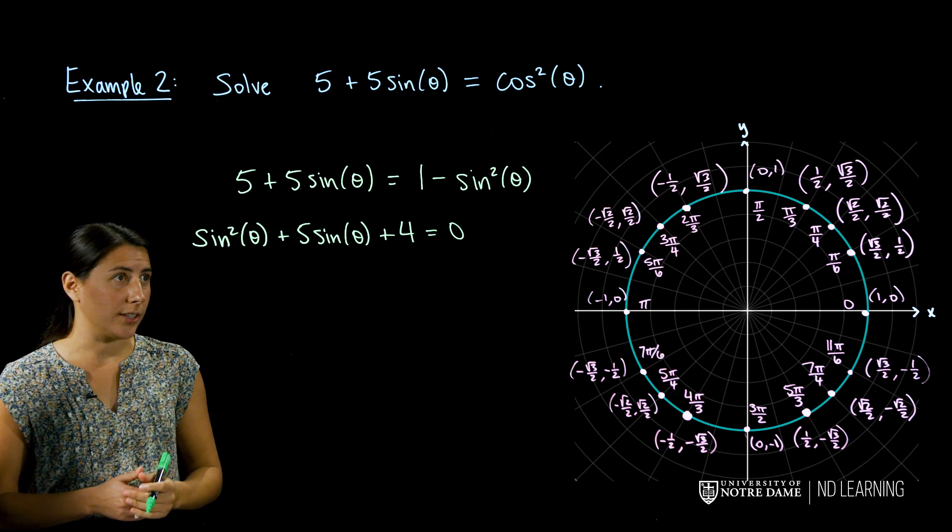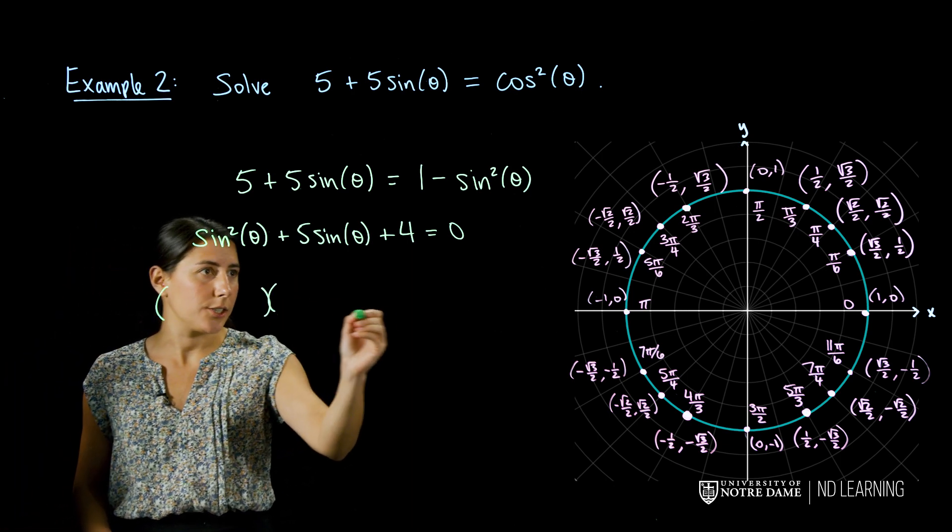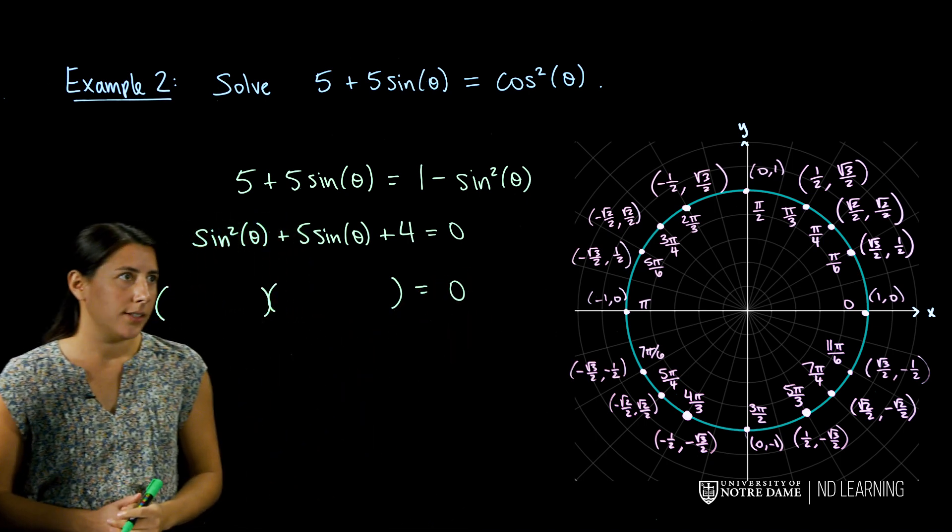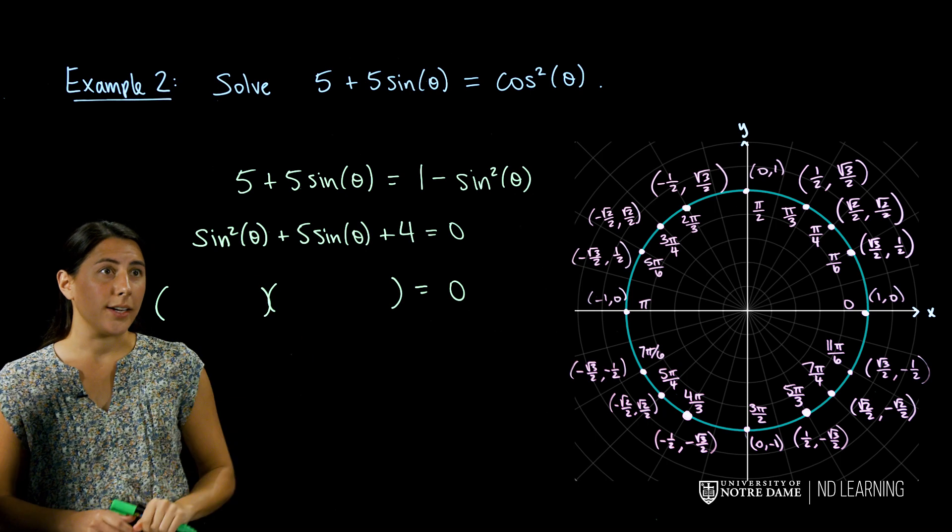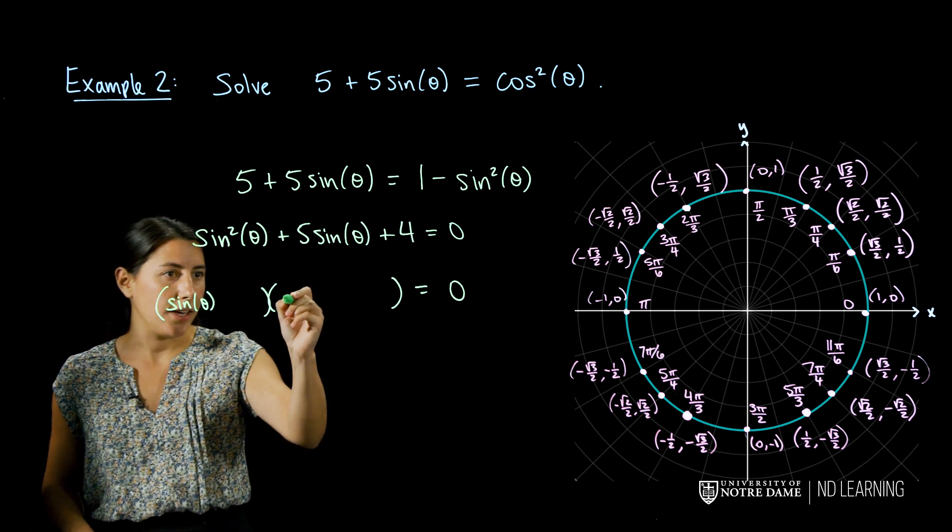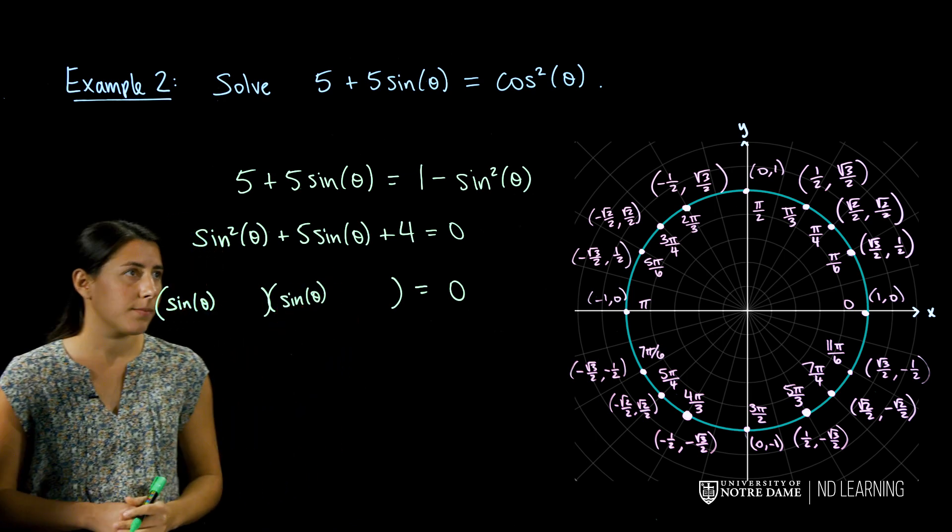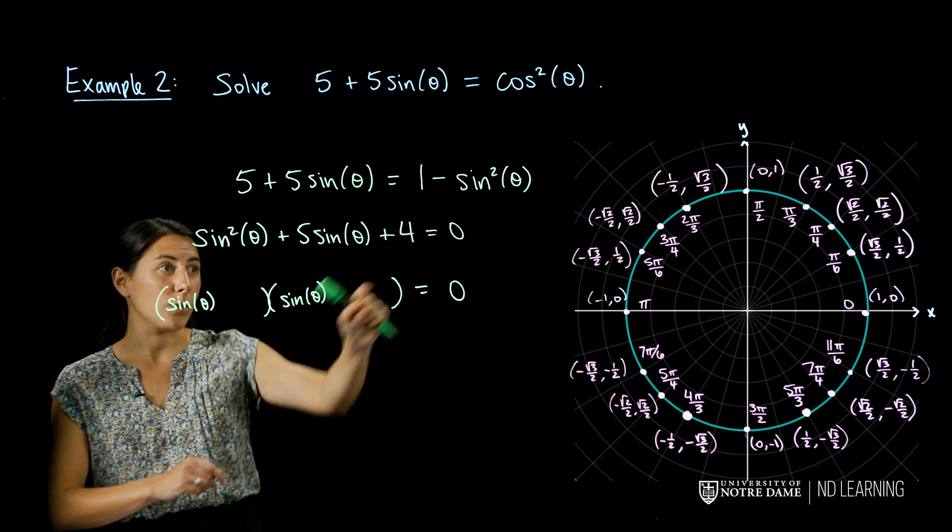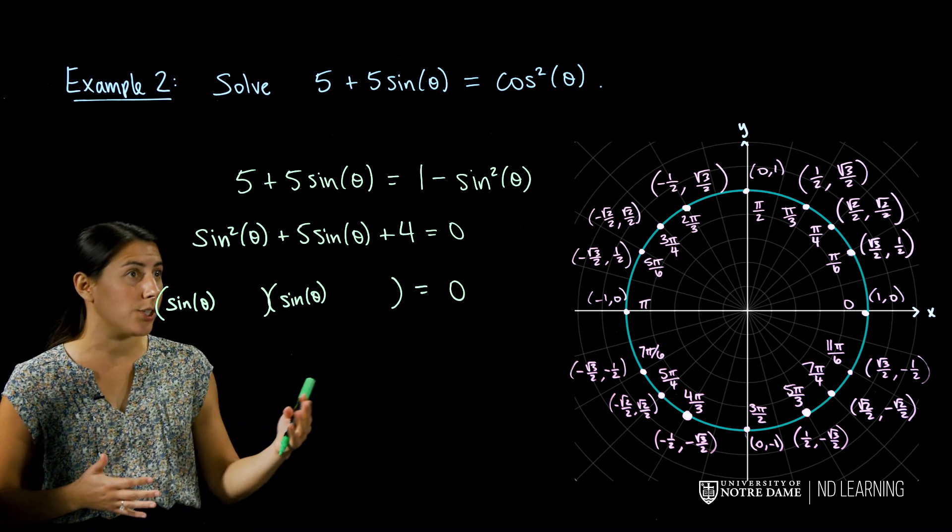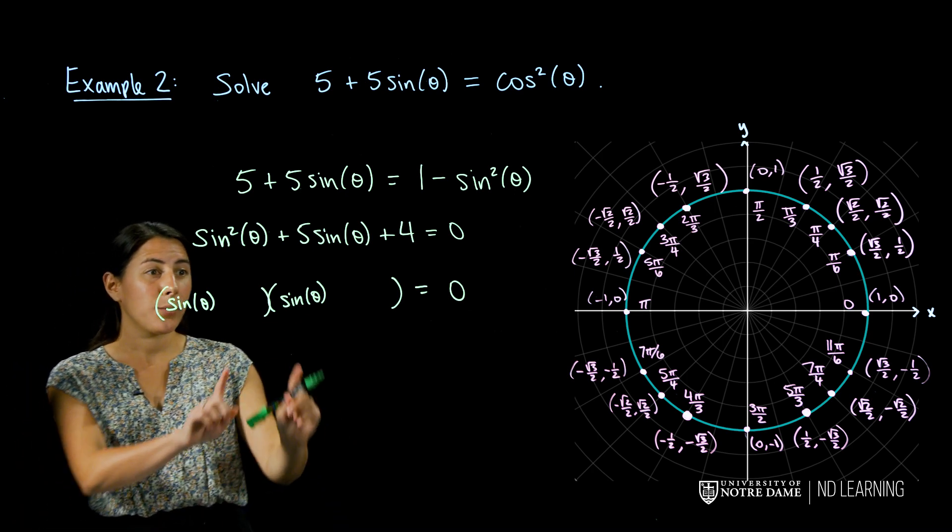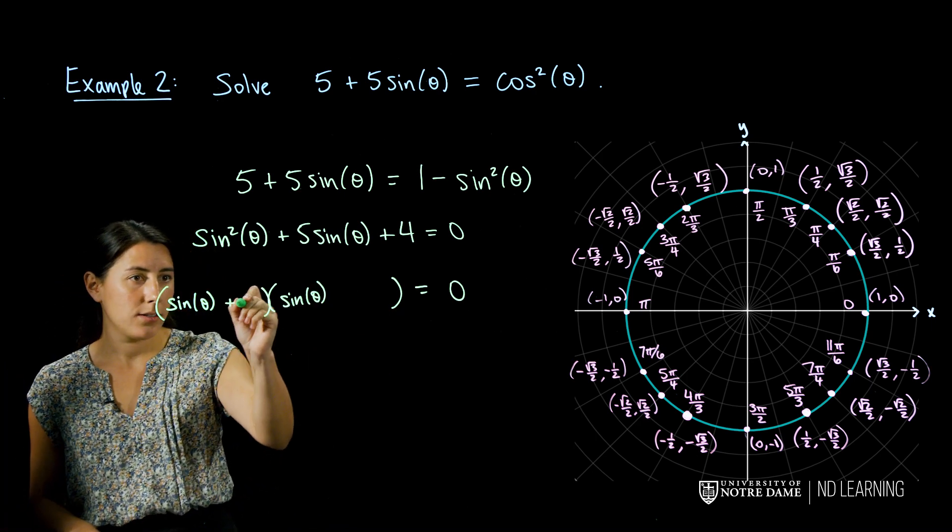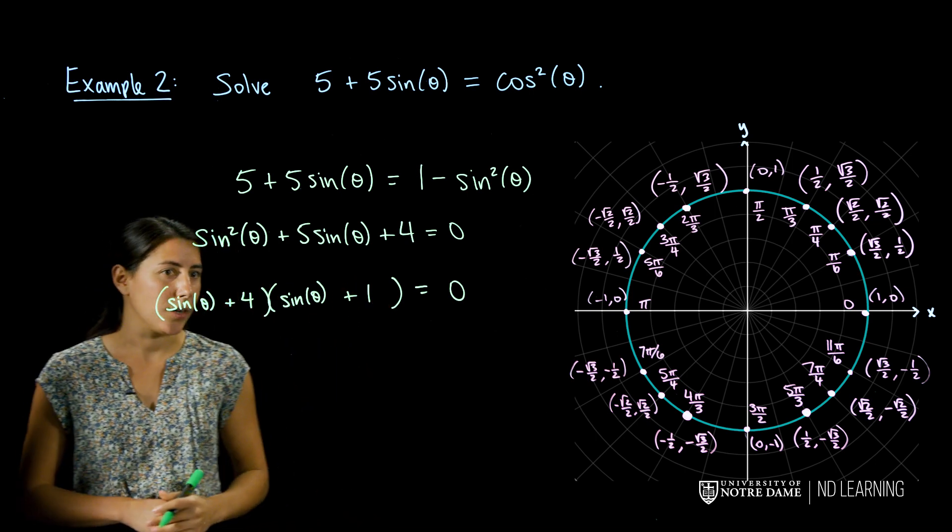Now let's see if we can factor this into two linear terms. This is a quadratic equation in sine. So I want whatever these first terms are to multiply to sine squared. So this could be sine of theta and sine of theta. And then I want the last two terms to multiply to plus 4. So this could be a plus 4 and plus 1 or 2 and 2. But whichever one we pick, we need the inside and outside terms to add to 5 sine theta. So let's pick plus 4 and plus 1.